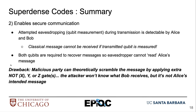There is a drawback, however. A malicious party could theoretically scramble the message by applying extra gates — the NOT, Y, or Z gate. The attacker won't necessarily know what Bob receives, but it won't be the message that Alice intended to send.